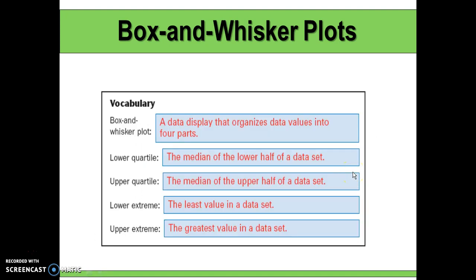The numbers we need to know to build a box-and-whisker plot are: the median, which is the middle number once data values are in order from least to greatest; the lower and upper quartiles, which are the medians of the lower and upper halves of the data; and the lower and upper extremes, which are the minimum and maximum values in the data set.